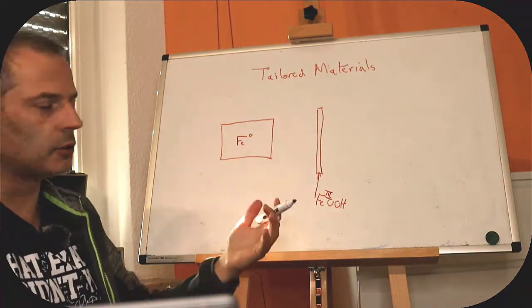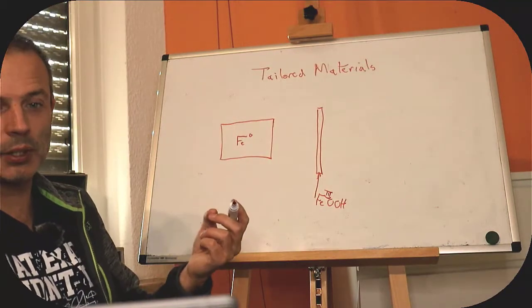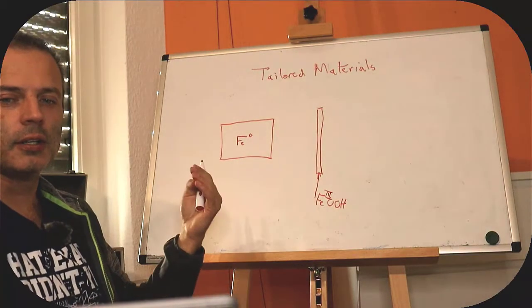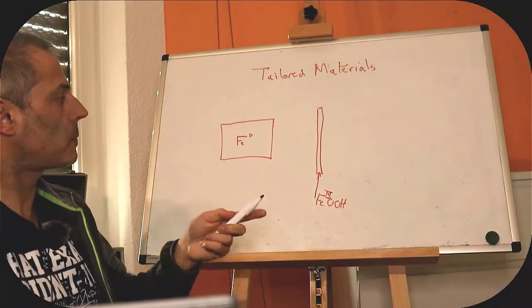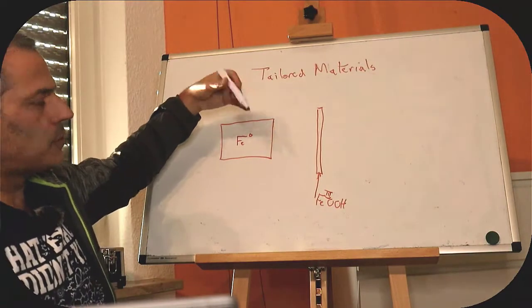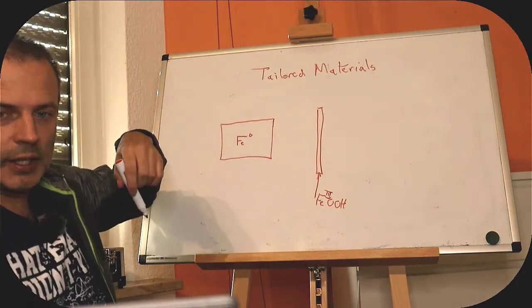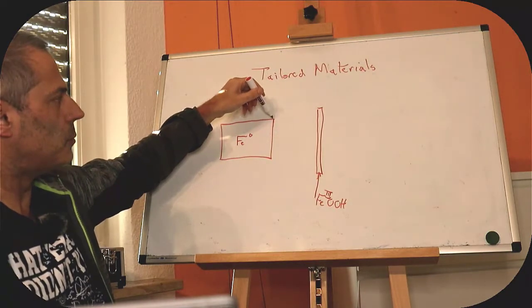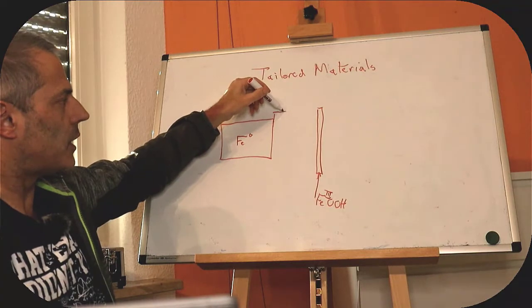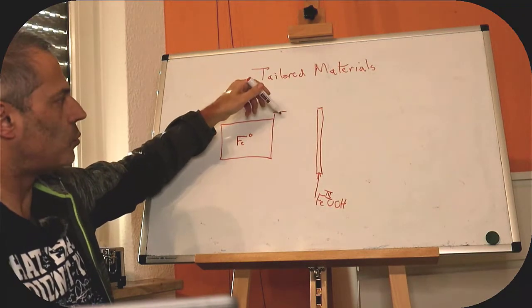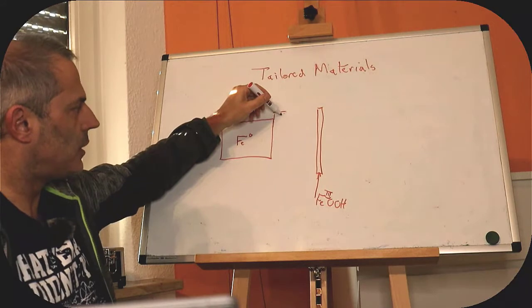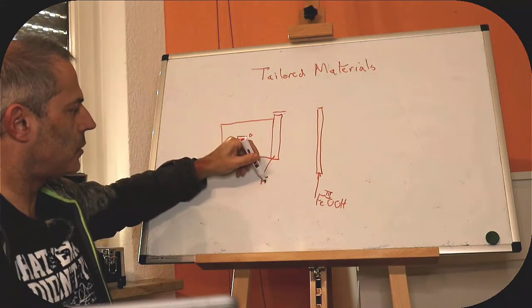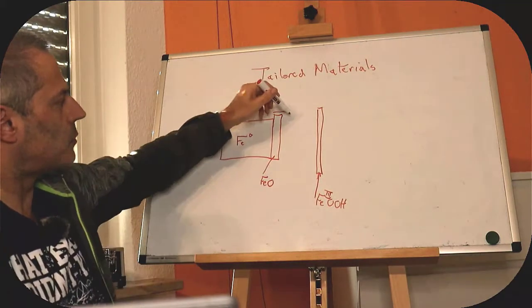But we have iron zero at the center. So if we put that in contact with our iron zero, we would expect there to be some kind of disproportionation, the iron three and the iron zero to react with each other to form iron two. So we can't really connect those directly together. What we need is some kind of mixture. And we can think of that as a transition from one material to the next.